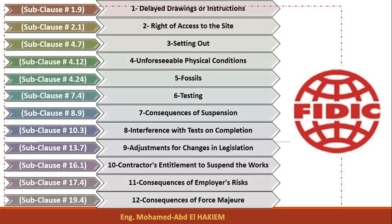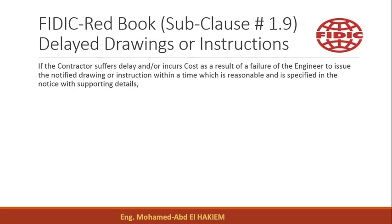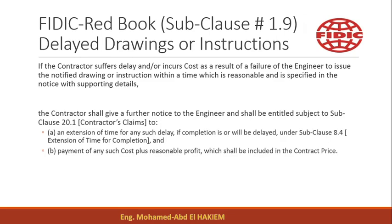Case classified as an Excusable and Compensable Delay: Cause 1 – Delayed Drawings or Instructions. If the contractor suffers delay and/or incurs cost as a result of a failure of the engineer to issue the notified drawing or instruction within a time which is reasonable and is specified in the notice with supporting details, the contractor shall give a further notice to the engineer.